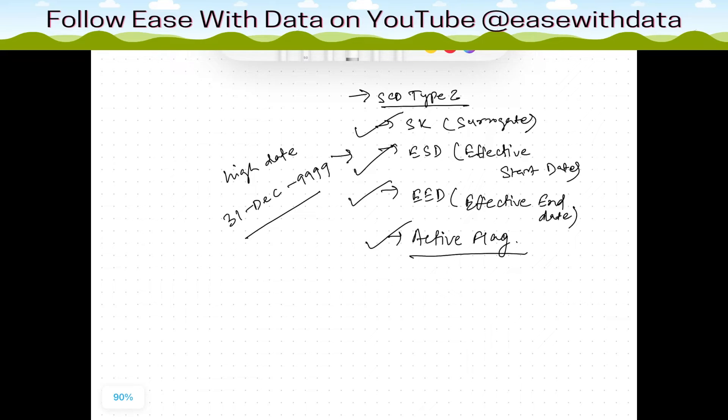Active flag denotes if the record is a current record or not. If the record is a current record, we usually use 1, or if the record is expired or a historical record, we use 0. You can also use Y or N for this.